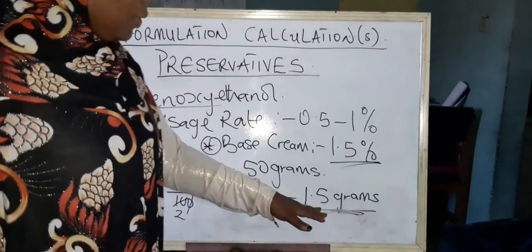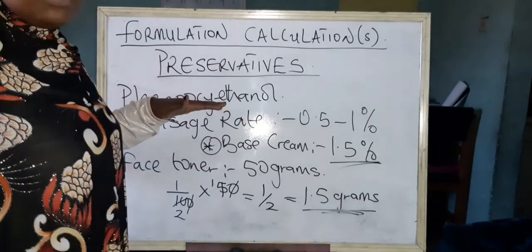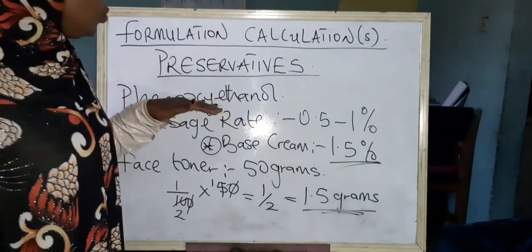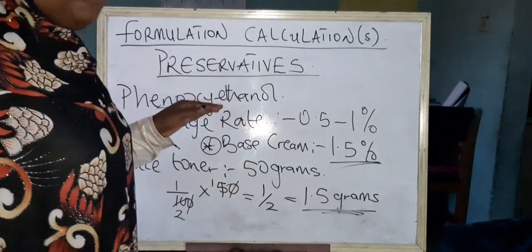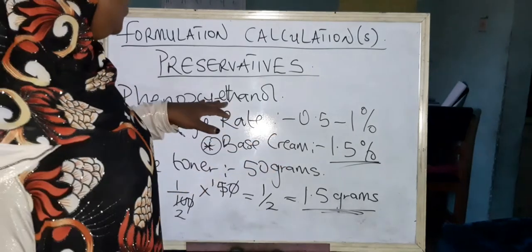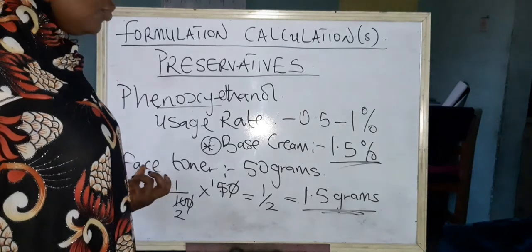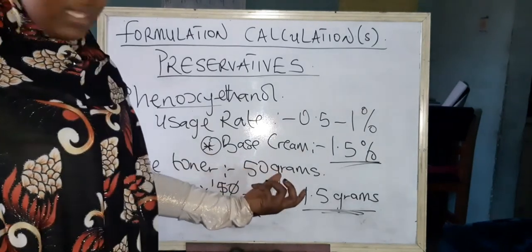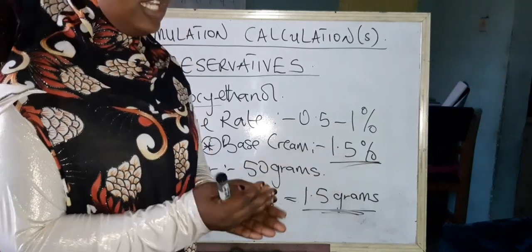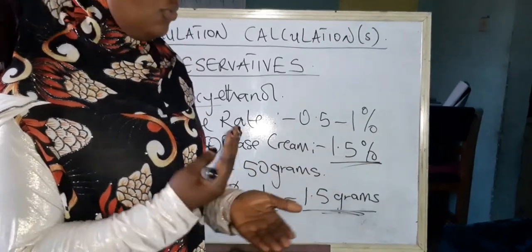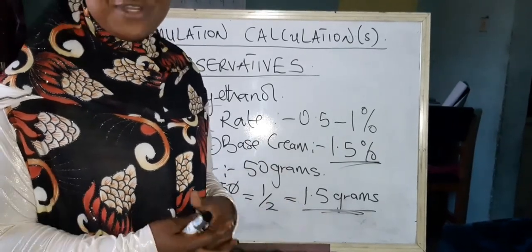But meanwhile, there are some preservatives, as I told you earlier, that are not as wide spectrum as phenoxyethanol. An example is like the Optiphen. The Optiphen is not as active as phenoxyethanol. So probably if you're using it for a face toner of this same kind of weight, you might want to consider going for it at about 1.5. So at the end of the day, I'm this person that always tells my students or whoever that wants to listen: study your ingredients. It's very important. Study your ingredients.